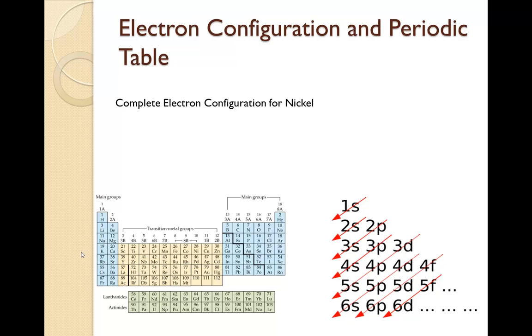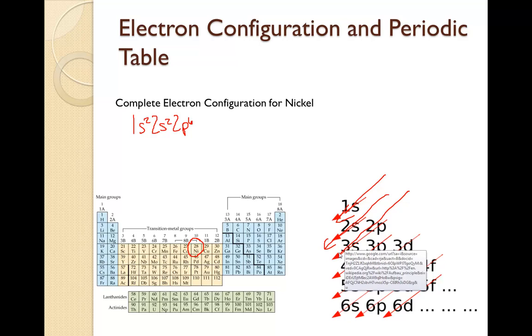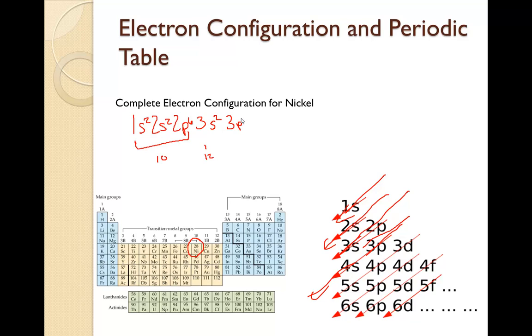Let's try that again with nickel. Nickel is down here with 28. 1s2, 2s2, 2p6, I'm following it down the aufbau chart. 3s2, this is 10, now we have 12, we're trying to get to 28. We're at 3s2, we go back up to 3p6, we now have 18, 4s2 first, that's 20, we need 8 more. We go back up to 3d10, but we only need 8.